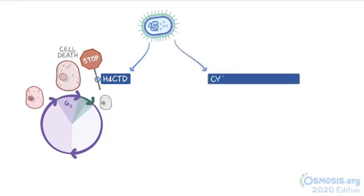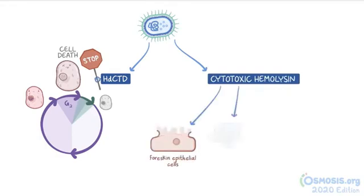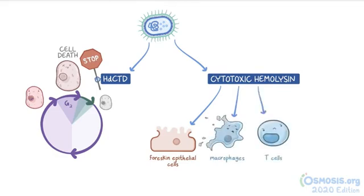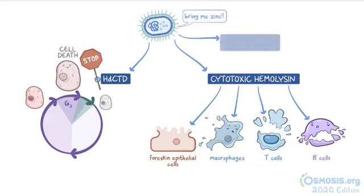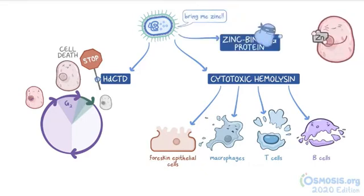The other toxin is cytotoxic hemolysin, which can lyse foreskin epithelial cells and immune system cells such as macrophages, T-cells, and B-cells. This leads to tissue destruction and avoidance of the immune system. Finally, Haemophilus ducreyi needs zinc to thrive and replicate, so it has a zinc-binding protein that snatches zinc from the host cells.